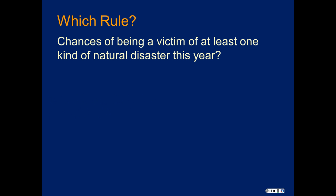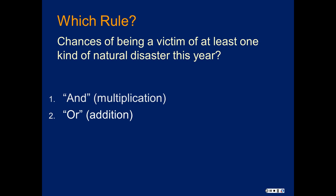The chances of being a victim of at least one kind of natural disaster this year — this is a situation where you have to reframe it into an AND or an OR type question, list all the possibilities, and separate them with ANDs and ORs. Let's imagine there are four kinds of natural disasters. 'At least one' fits better with OR because you could rewrite it as: what's the probability that I will be the victim of an earthquake, or a tornado, or a tidal wave, or a comet hitting the earth? That's what 'at least one' means — it doesn't fit with AND. So that's going to be an OR situation.